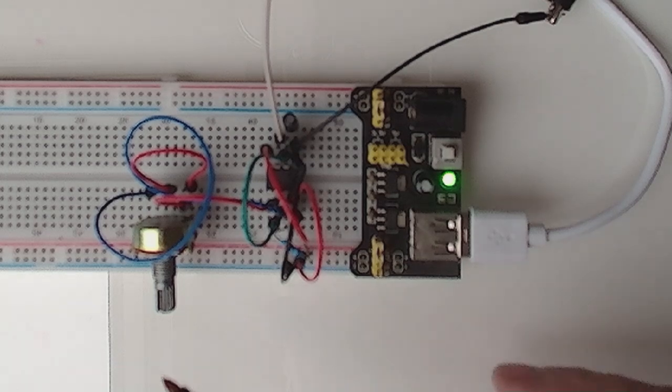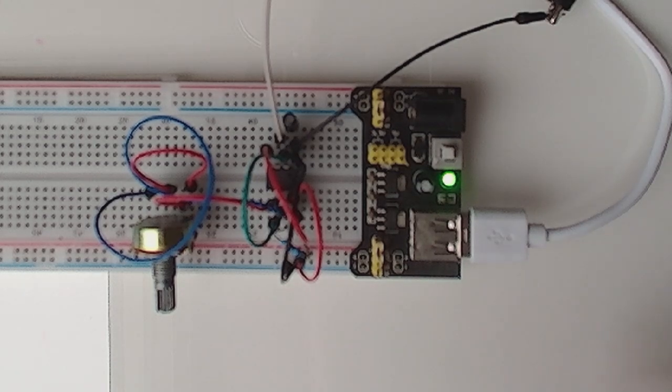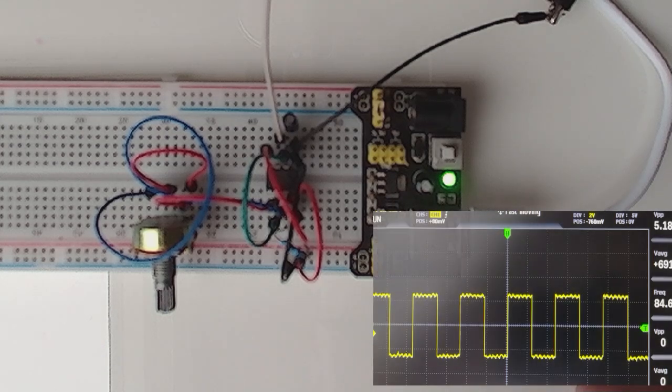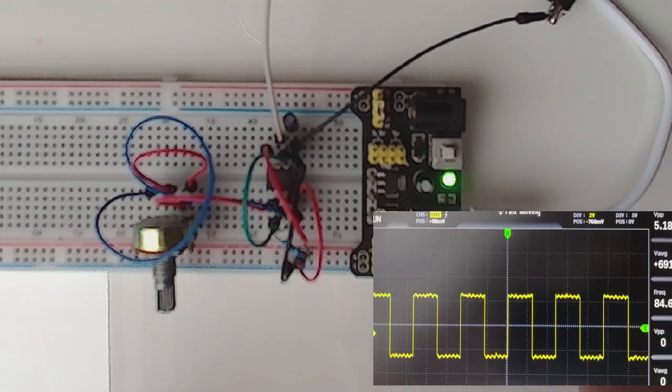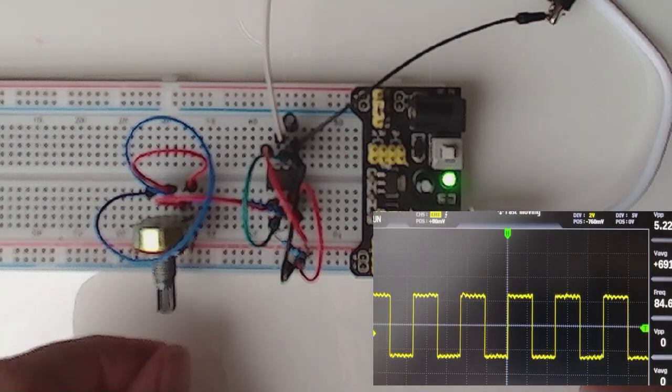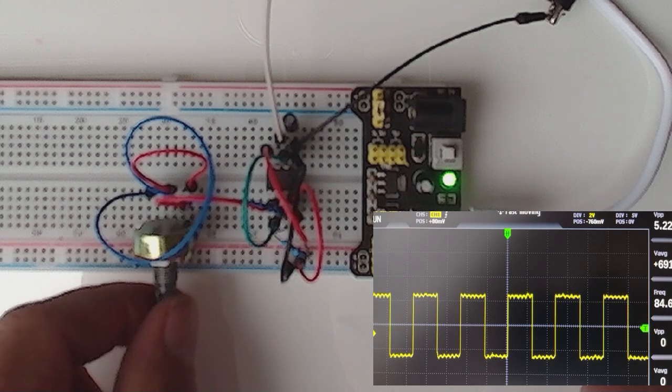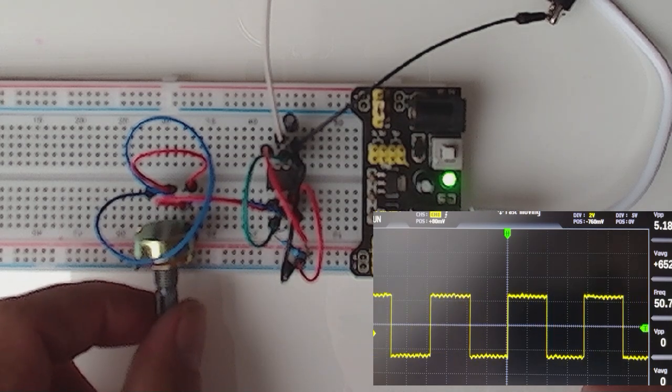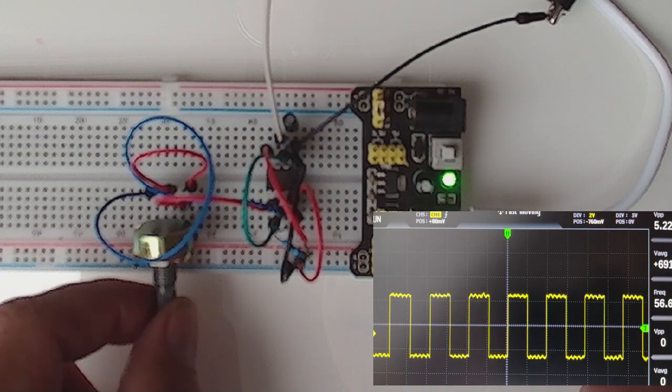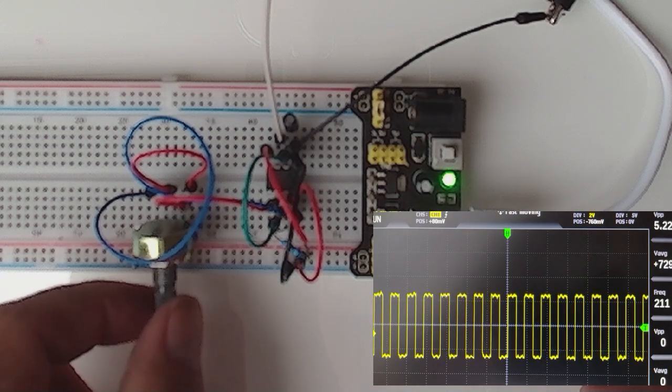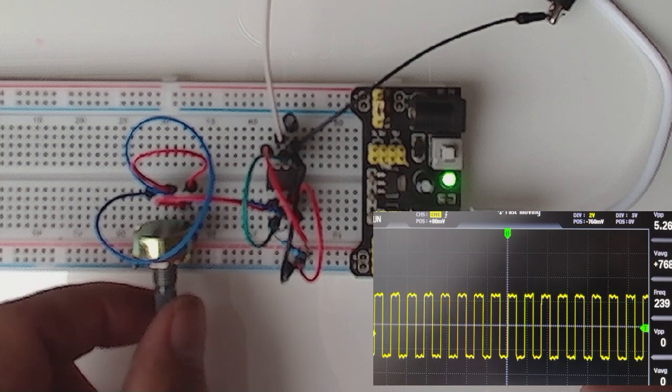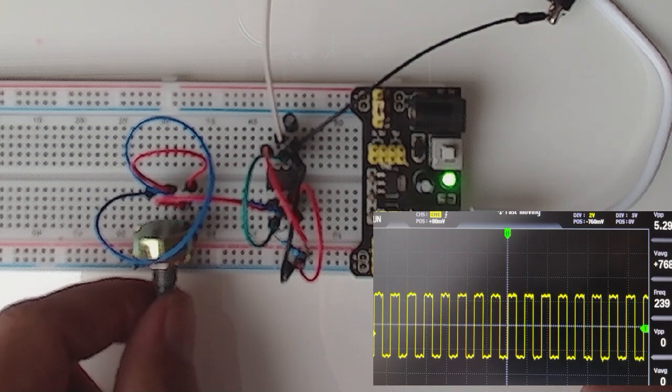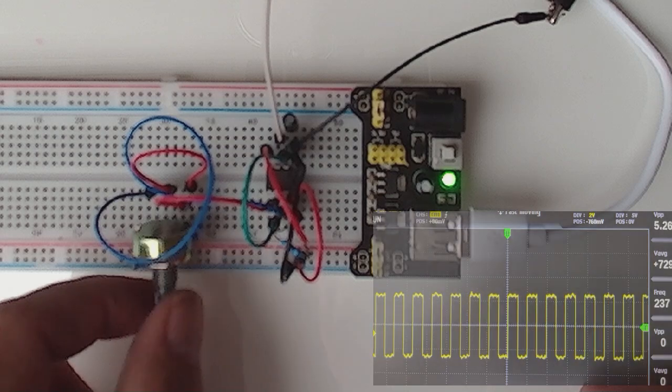And when I turn the resistor we should see the frequency going up or down. So I'll turn it now - it goes down, 50 hertz, and now it goes up to around 239 hertz. So yeah, low frequencies.